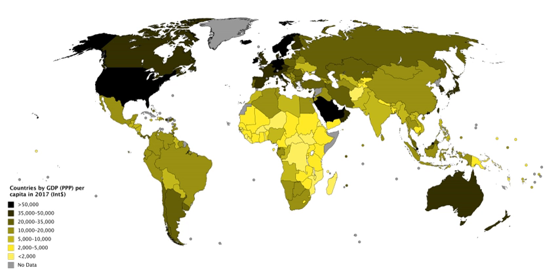As a result, an economy can run down its assets yet, at the same time, record high levels of GDP growth, until a point is reached where the depleted assets act as a check on future growth. The committee noted that the recorded GDP growth rate overstates the sustainable growth rate, and that broader measures of well-being and wealth are needed. It has also been suggested that countries that have authoritarian governments, such as the People's Republic of China and Russia, inflate their GDP figures.